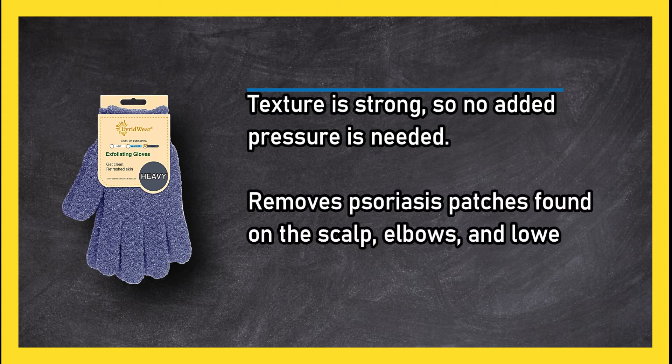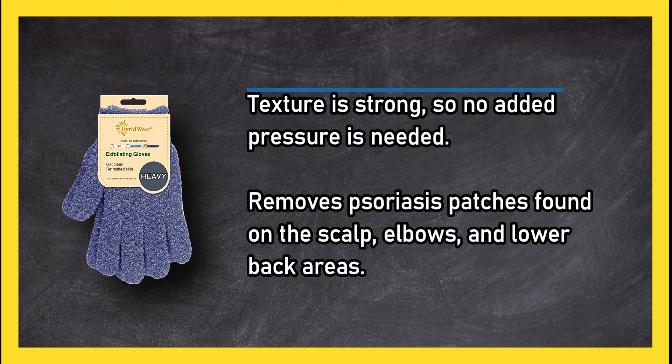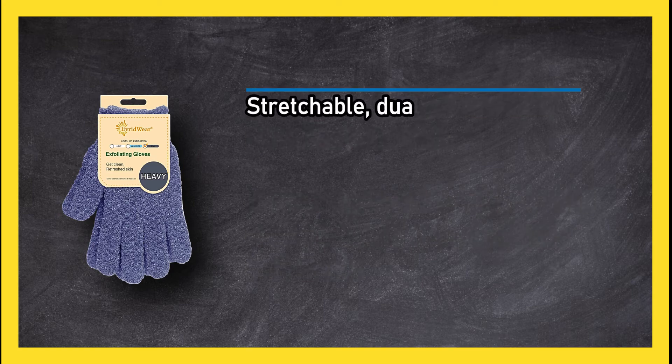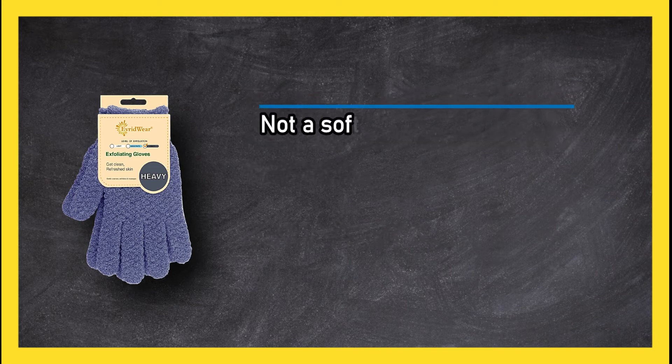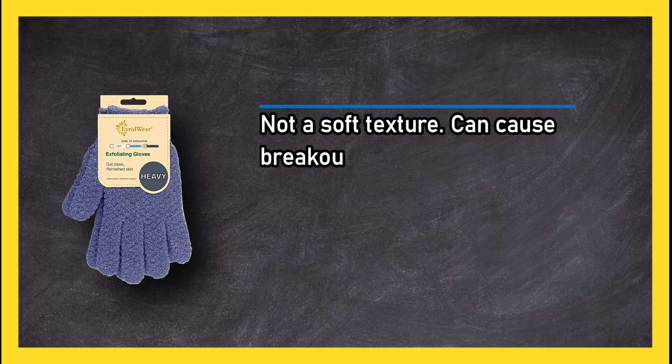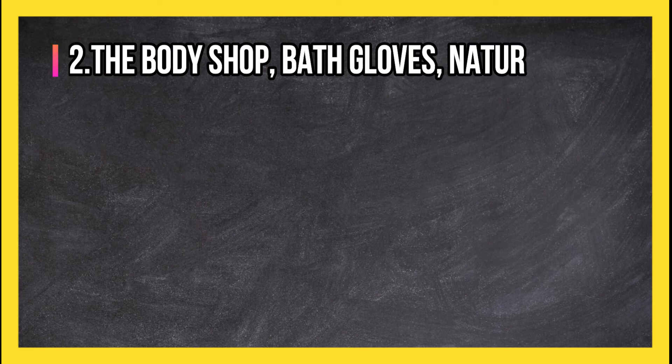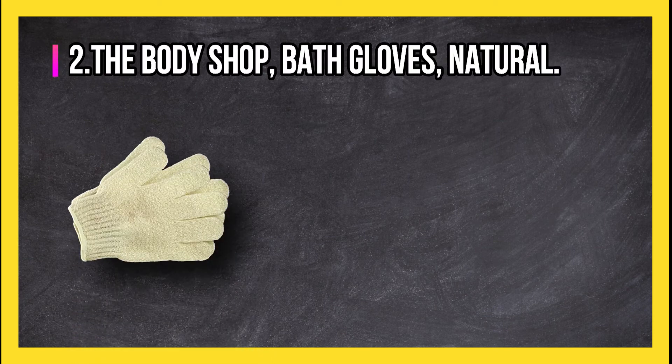Stretchable dual-sided gloves that provide essential exfoliation to dry skin. Best for psoriasis. Not a soft texture; can cause breakouts when used on the face. At number two: The Body Shop bath gloves. Natural texture is not uncomfortably coarse but rough enough to exfoliate. Gloves are durable, affordable, and machine washable.